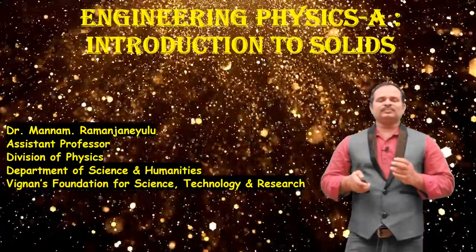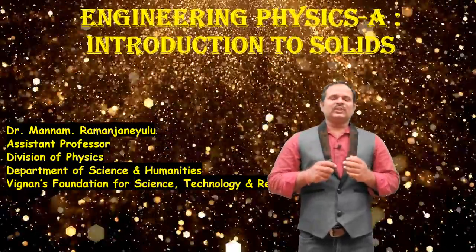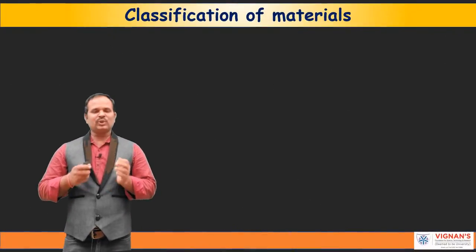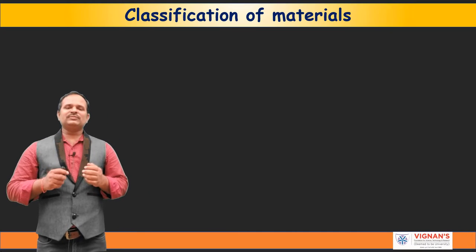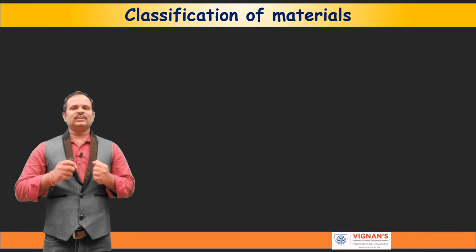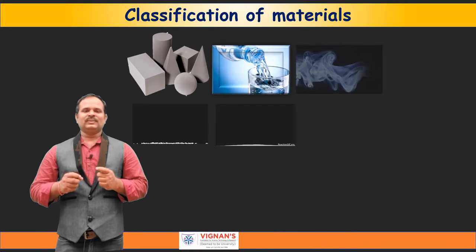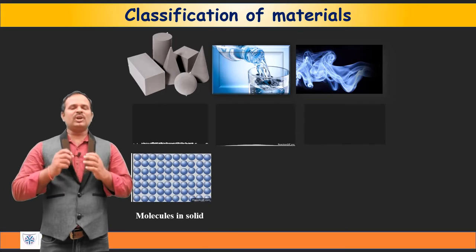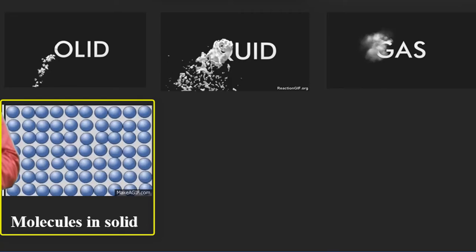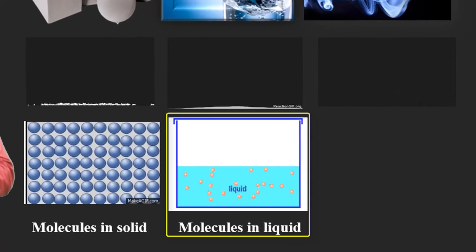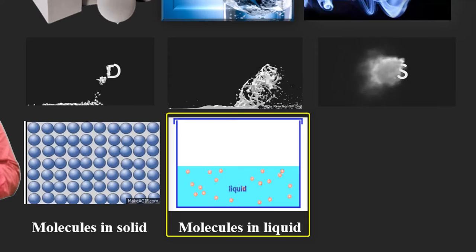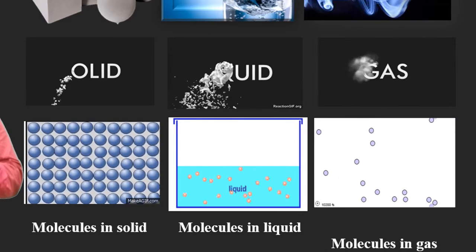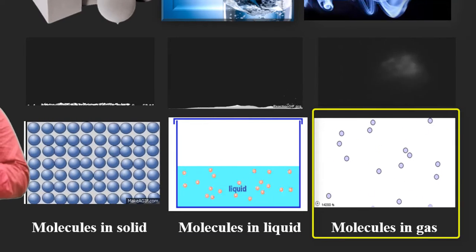Now to start with, we will begin with the classification of materials. As you all know, in the universe, materials are classified into solids, liquids, and gases. As you can see in the picture, the atoms and molecules in the solid are tightly bound together with chemical bonds. In the case of liquids, they can move relatively freely. In the case of gases, they are completely free and can move randomly in all directions.